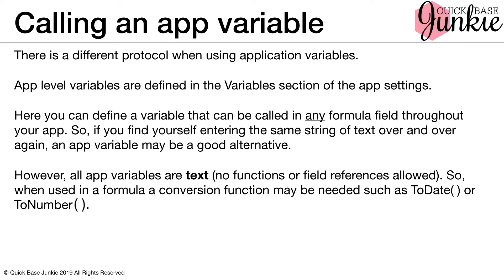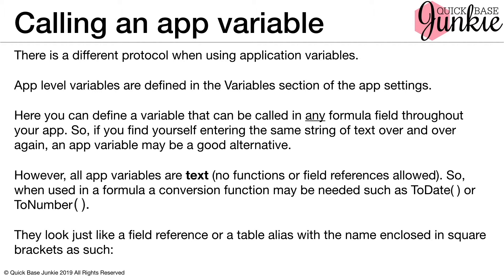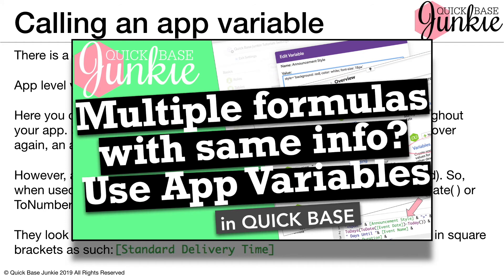However, all app variables are text — no functions or field references are allowed. So when used in a formula, a conversion function may be needed, such as to date or to number, to convert that text to a date or a number. They're also called differently in a formula — they look just like field references or table aliases with the name enclosed in square brackets. We won't be using app variables in this course, but if you'd like more information, check out my how-to video on using application variables in QuickBase.